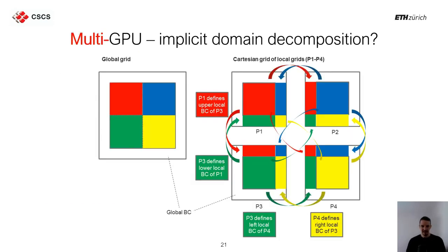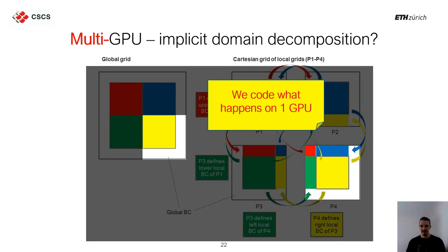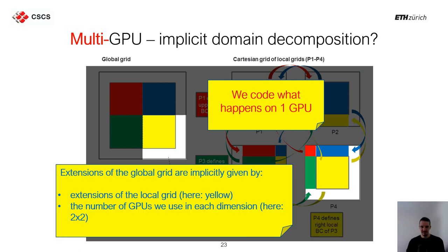When I talk about implicit domain decomposition, what do I mean? On the left we have the global grid, and on the right we have the decomposed grid. Typically, people first define the global grid and then decompose it. We do it the other way around: we define the local grid, and then by the number of processes launched, we implicitly define the global grid. The code describes how to solve the local problem — what you do on one GPU. The global grid size is implicitly given by the local grid size (shown in yellow) times the number of GPUs in each dimension, so here two by two.